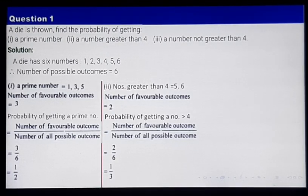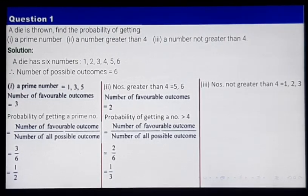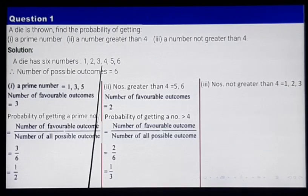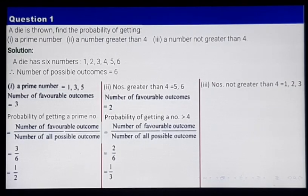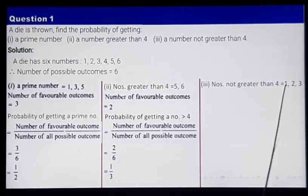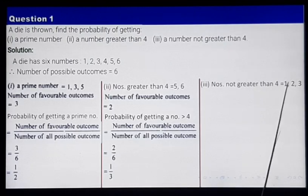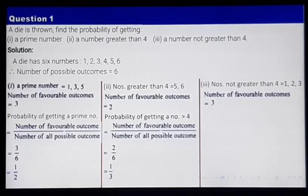Getting a number not greater than 4. Numbers which are not greater than 4 are 1, 2, and 3. These are the 3 numbers which are not greater than 4 out of these 6.